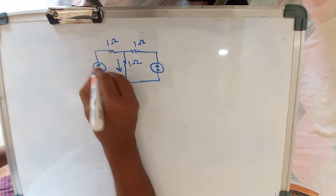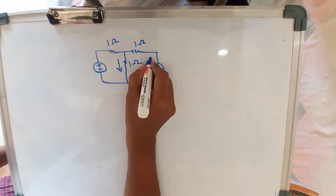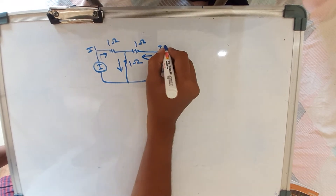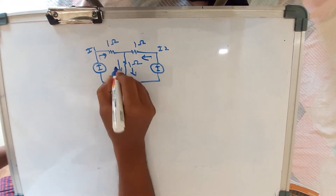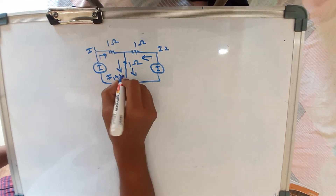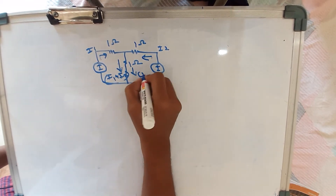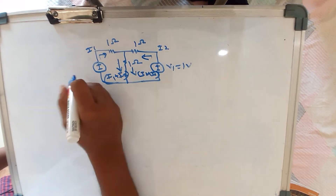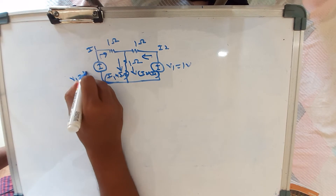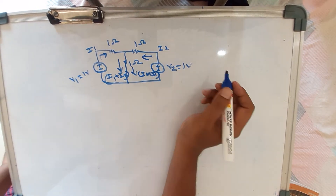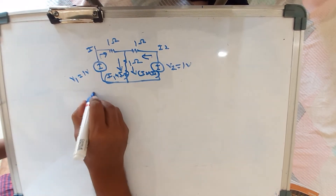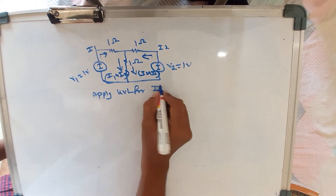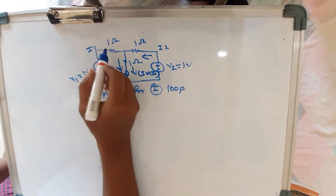The current is flowing from plus to minus. Here I1 is the mesh current for the first loop and I2 for the second loop, with the shared branch carrying I1 plus I2. V1 equals one ohm and V2 equals one ohm. Now apply the second step: apply KVL for the first loop.